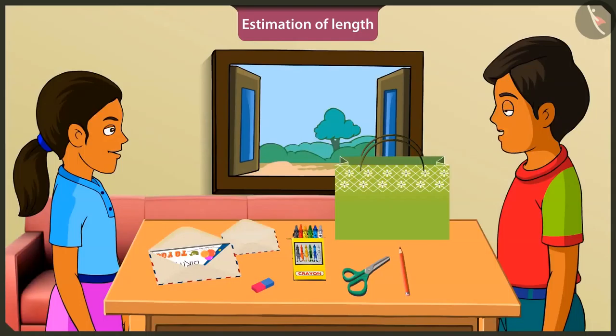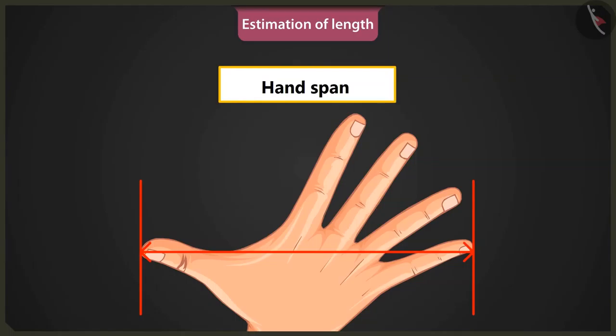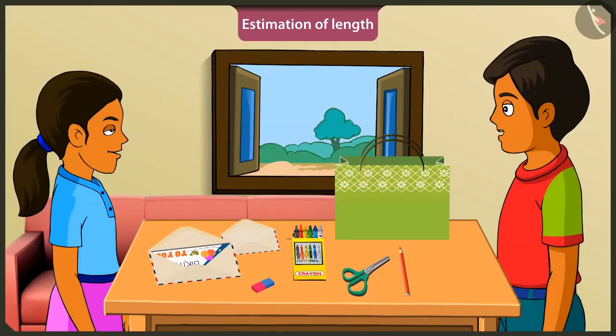Mintu, some people use these units even today to estimate the length. Then, can I find the length of this window using my palm to measure it? Yes, Mintu. The distance between the tip of one's thumb to the tip of the pinky finger is called a hand span. So, Mintu, you can use hand span to find the length of the window.